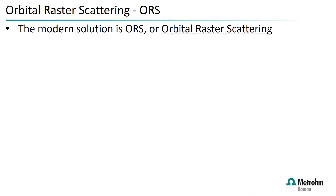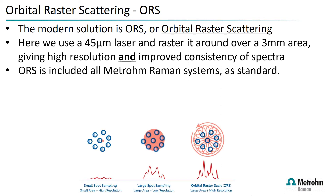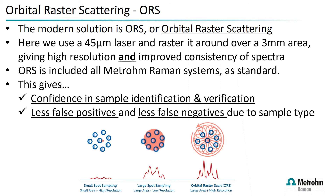The modern solution is a technique called ORS — also known as orbital raster scanning. Using a 45-micron laser, we raster it over a three-millimeter area by moving the laser with a mirror. This ensures we cover all particulates using our small spot size. This technique is included as standard on all Metrome systems and provides confidence in sample identification and verification, resulting in fewer false positives and false negatives.